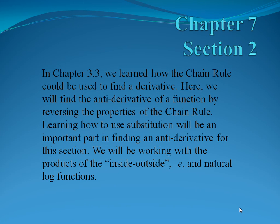Chapter 7, Section 2. In Chapter 3.3 of Calculus 1, we learned how the chain rule could be used to find a derivative. Here, we will find the antiderivative of a function by reversing the properties of the chain rule. Learning how to use substitution will be an important part in finding an antiderivative for this section.